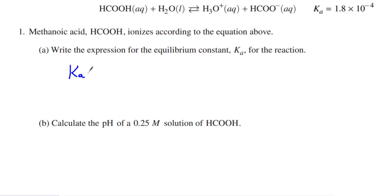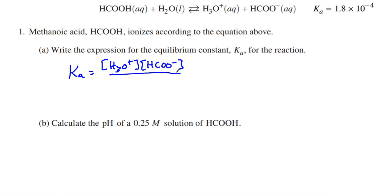The Ka is always products over reactants. So we have the H3O+ — we put brackets because it's concentration — times the HCOO-, the conjugate base, all over the weak acid, HCOOH. This is a primary topic of equilibrium. We don't put a liquid in the denominator because liquids don't have a concentration.